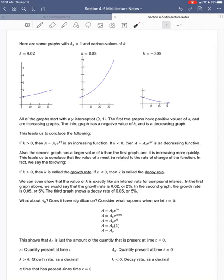So, I've sort of summarized this. All the graphs start with a y-intercept at (0, 1). The first two graphs have positive values of k, and they're increasing. The third graph has a negative value of k, and it's decreasing.